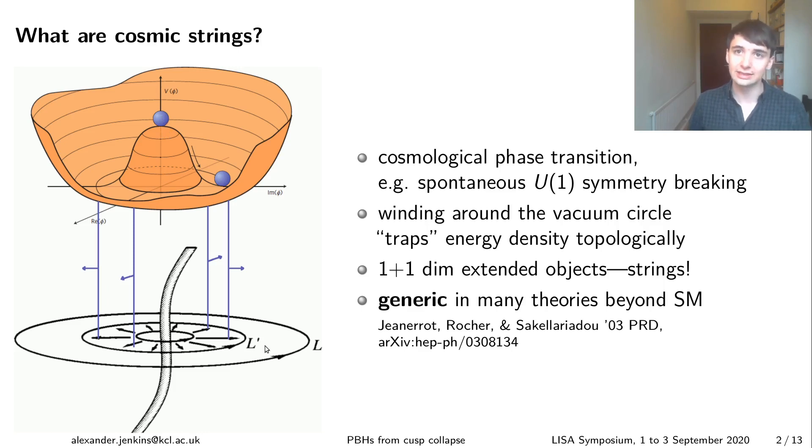And if you string together a bunch of those planes with that non-zero winding, you end up with this line of energy density, which behaves like a string. So we call them cosmic strings. These things are generic in very many theories beyond the standard model of particle physics. And they're a really good candidate of something to look for if you're interested in testing fundamental physics or exotic new physics with gravitational waves.